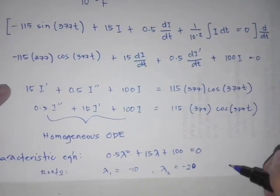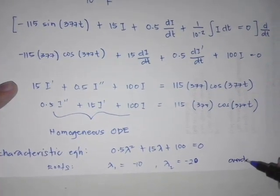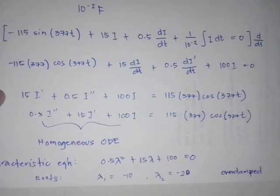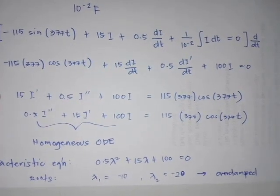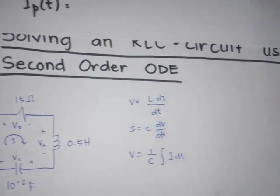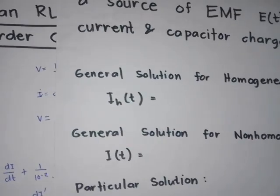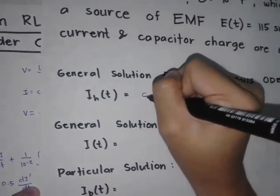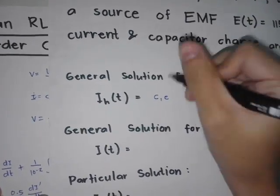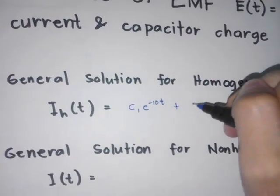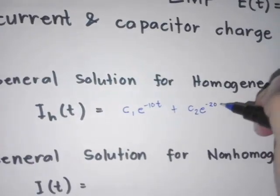We can call this overdamped, by looking at these roots, because they are distinct real roots. So when it is overdamped, the general solution for the homogeneous ODE is C1 times e to the negative 10T plus C2 times e to the negative 20T.